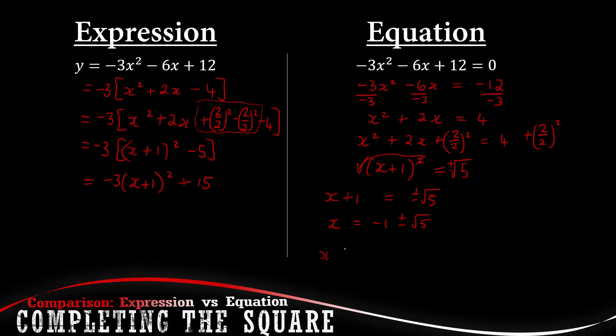So our two roots basically is x equals minus 1 plus square root of 5, or x is equal to minus 1 minus square root of 5. But yes, this is just to explain the main differences when you have to use it or when you have an expression and when you have an equation.